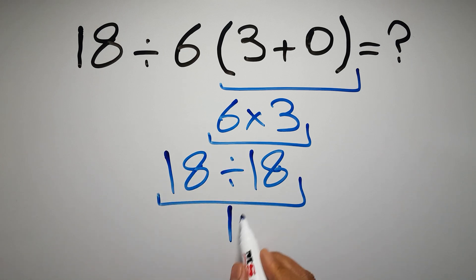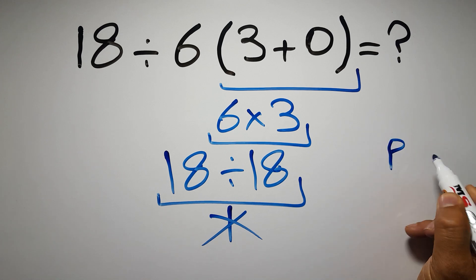But this answer is not correct, because according to the order of operations, first we have to do parentheses, then exponents, then multiplication or division.